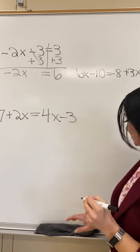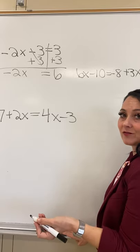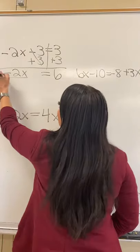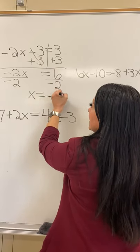And I bring down my negative 2x. So now I've reduced it a little bit. And my last step is to always divide by the number that's in front of the x. So divide both sides by negative 2. So x equals negative 3.